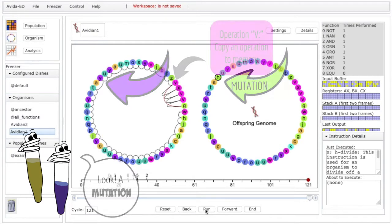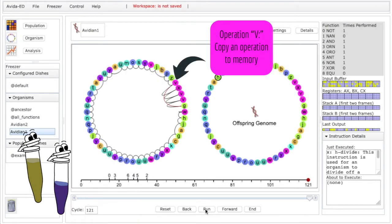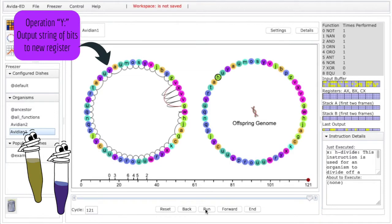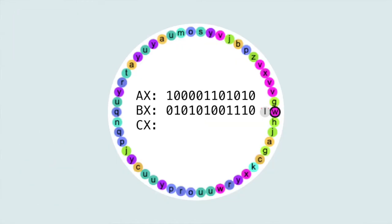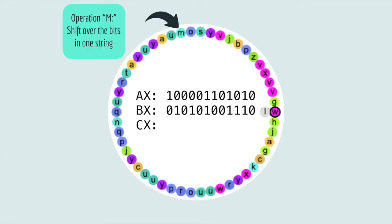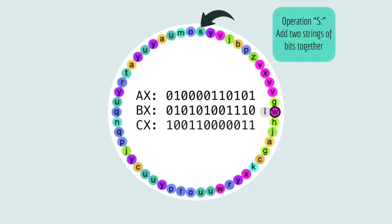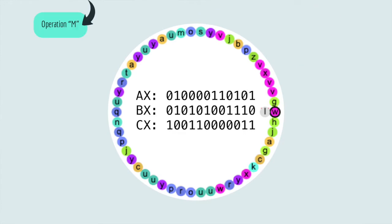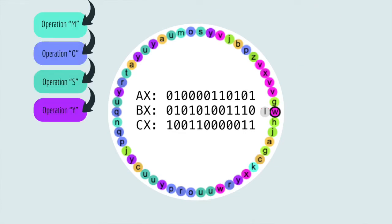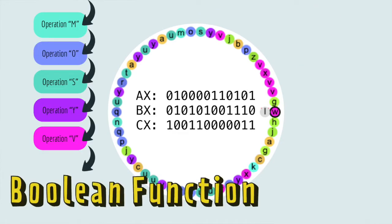Some of the operations have to do with replication, but some have to do with random strings of bits. Each AVIDian receives strings of bits as input, and different operations manipulate the bits differently — by doing things like shifting all the bits one to the right, adding them together, and so on. If certain operations are put together in the right order, they will perform a Boolean function.